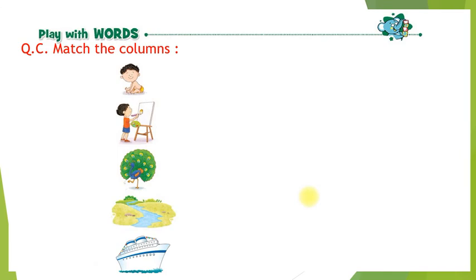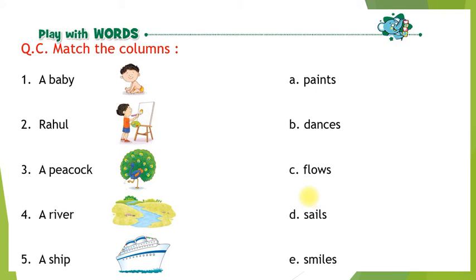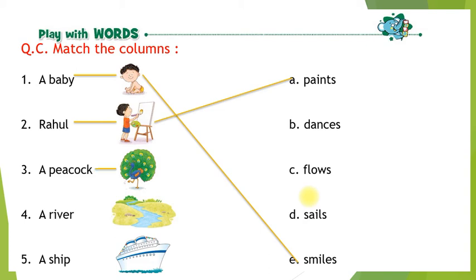Next: match the following. A baby — smiles. Rahul — paints. Peacock — dances. A river — flows. A ship — sails.